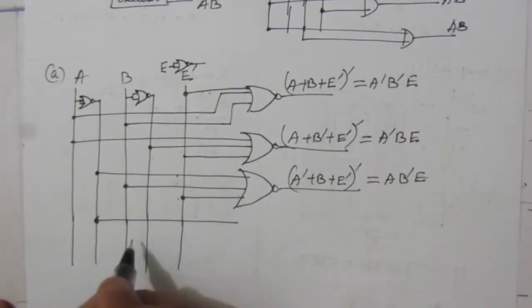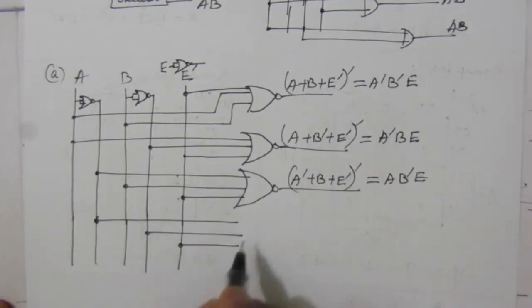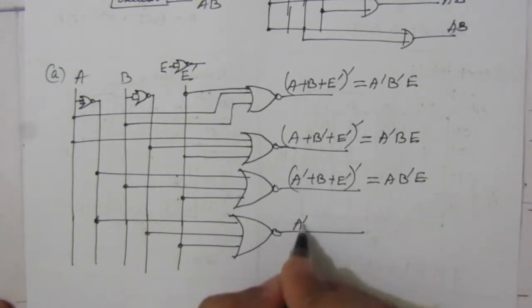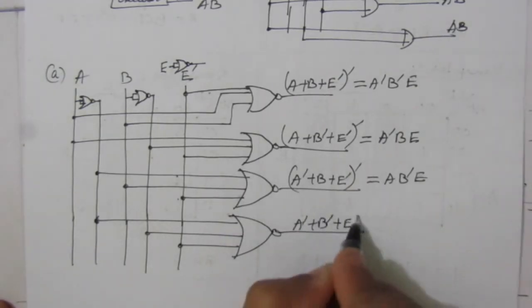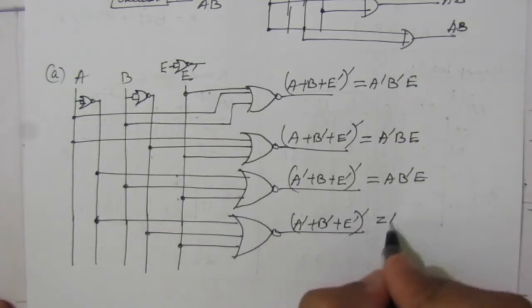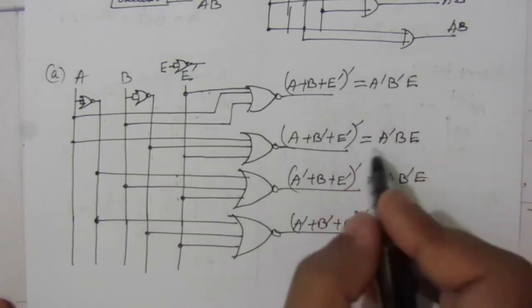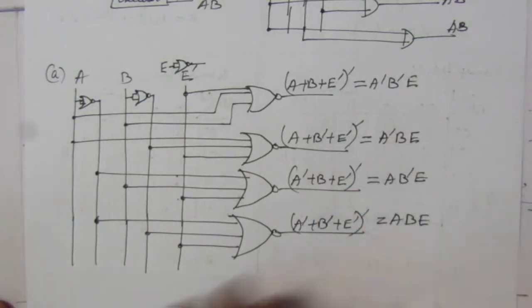For the fourth output AB, we take a line from A̅, a line from B̅, and a line from Ē into a NOR gate. This gives (A̅ + B̅ + Ē)', which by De Morgan's theorem equals ABE. So these are the four outputs of the 2-to-4 decoder, and the first part of the problem is complete.